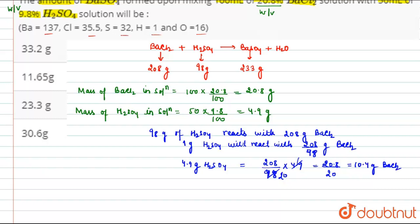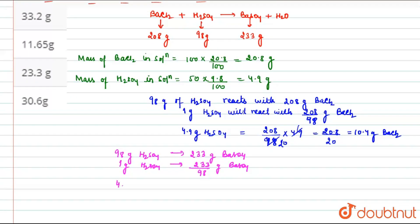So, we can deduce that 98 grams of H2SO4 was producing 233 grams of BaSO4. Now, 1 gram H2SO4 will produce 233 divided by 98 grams of BaSO4. And 4.9 grams of H2SO4 will produce 233 divided by 98 into 4.9. This will be 233 divided by 20. This will be equal to 11.65 grams of BaSO4.